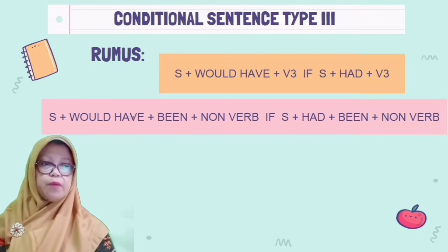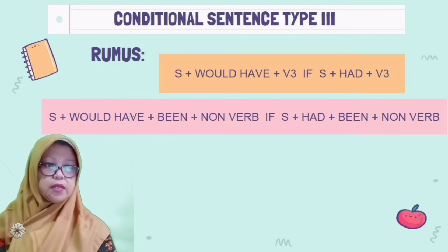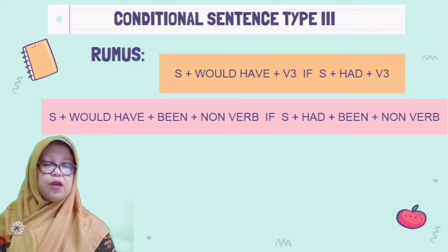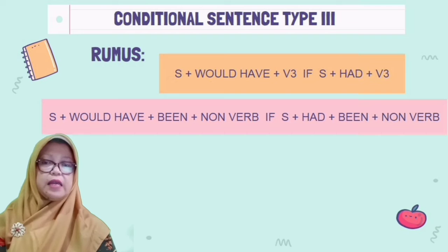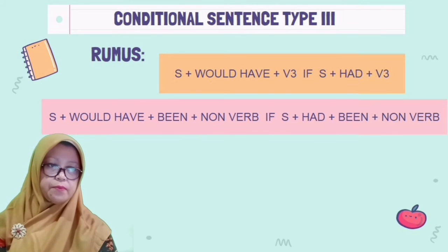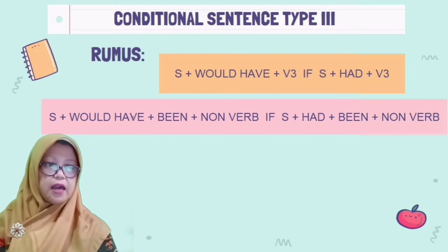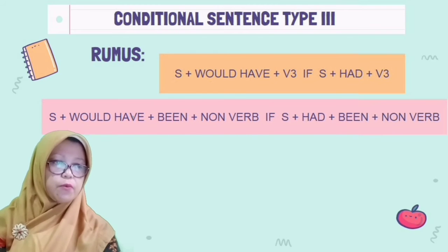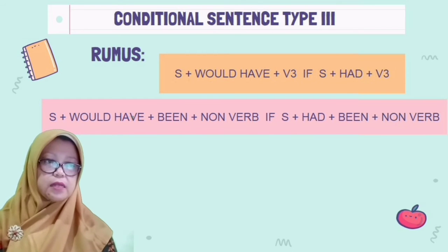Atau, jika yang tidak menggunakan kata kerja, mempunyai rumus: Subject diikuti modal would, diikuti kata bantu have, diikuti pengganti verb ketiga yaitu 'been', diikuti if, diikuti subject, diikuti have, diikuti pengganti kata kerja ketiga yaitu 'been', kemudian diikuti noun atau yang bukan kata kerja.